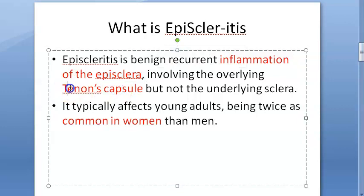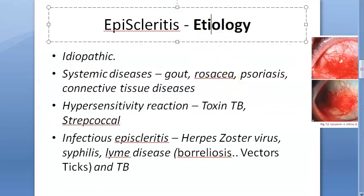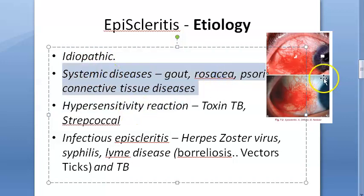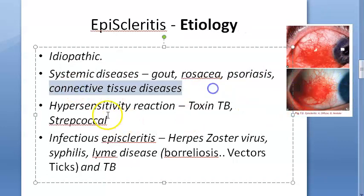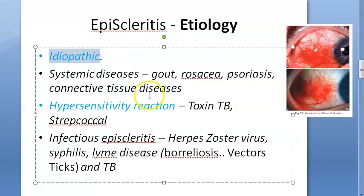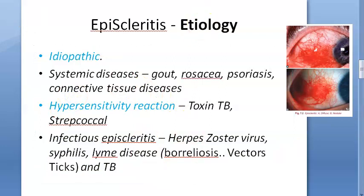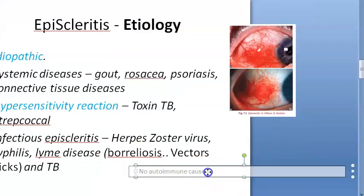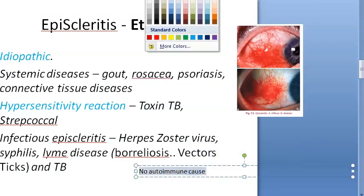Inflammation of the episclera becomes episcleritis, and that can involve the overlying tenon's capsule. It affects women more commonly. Why does this get inflamed? Because of idiopathic reasons and some systemic reasons like gout, rosacea, psoriasis, connective tissue disorders, and hypersensitivity reactions — mainly idiopathic. Importantly, there is no autoimmune cause for episcleritis. The autoimmune cause — like rheumatoid arthritis — usually affects the sclera, not the episclera.